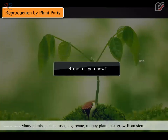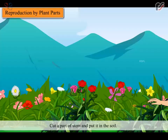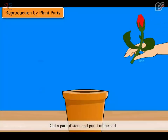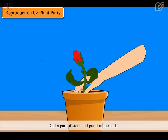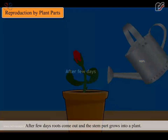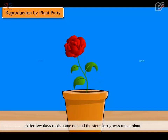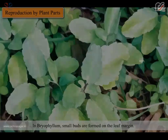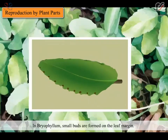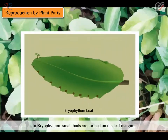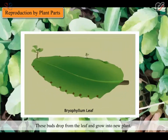Let me tell you how. Cut a part of stem and put it in the soil. After few days, roots come out and the stem part grows into a plant. In bryophyllum, small buds are formed on the leaf margin. These buds drop from the leaf and grow into new plants.